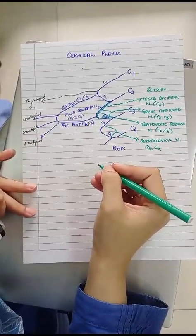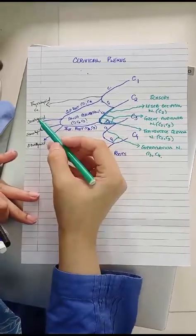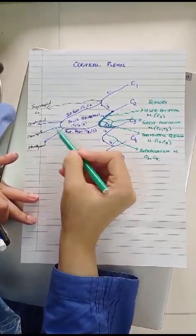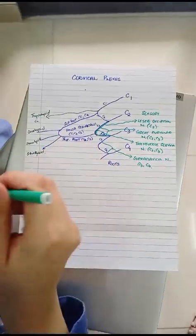Lastly we will talk about the motor distribution from the cervical plexus. As we discussed the infrahyoid muscles which are supplied by the branches of the ansa cervicalis and thyrohyoid which is supplied by a separate branch from C1.